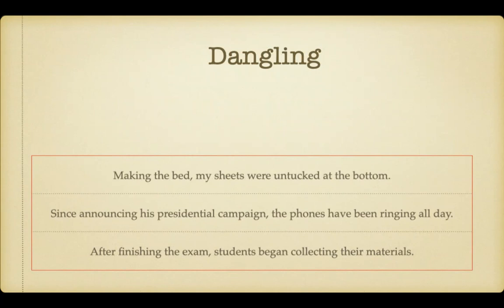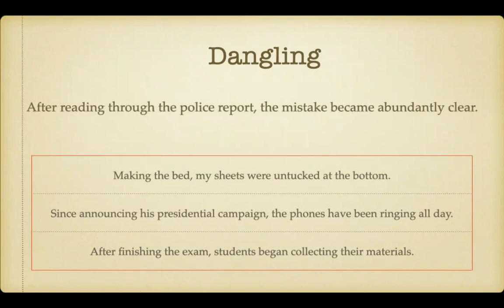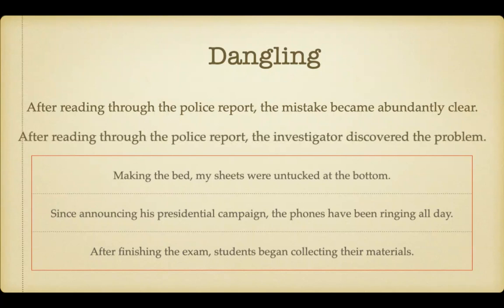The second type of incorrect modifier is a dangling modifier. In these cases, the word that is being modified is completely missing from the sentence. Consider this example: 'After reading through the police report, the mistake became abundantly clear.' The modifier in this sentence is dangling because the sentence never identifies who's reading through the police report. To correct this sentence, simply add the missing information as close to the modifier as possible: 'After reading through the police report, the investigator discovered the problem.' This sentence is now correct because the audience knows that the investigator is the one reading through the police report.